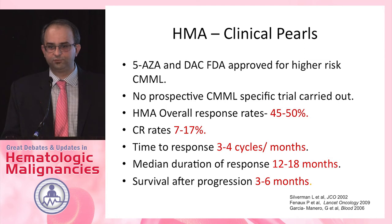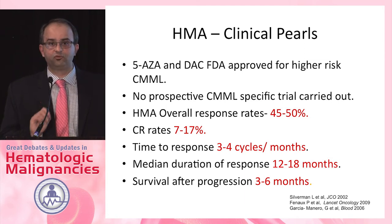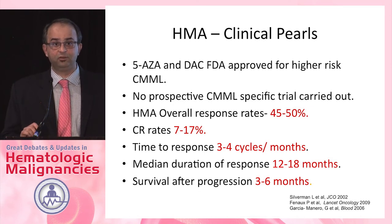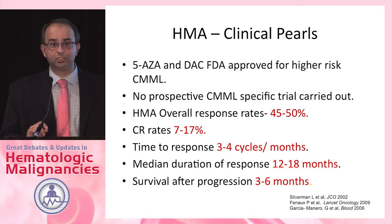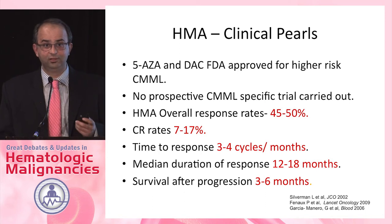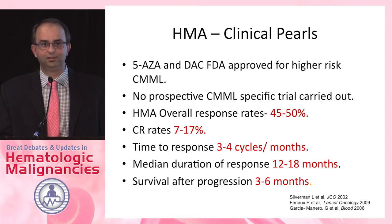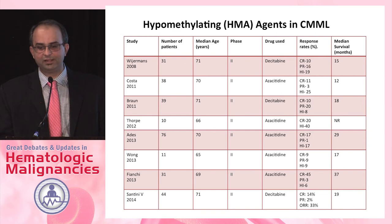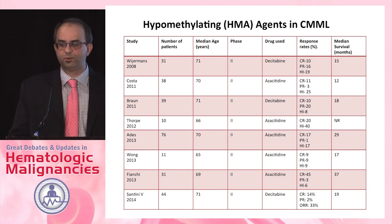There is no prospective trial that has assessed hypomethylating agents specifically in CMML. Azacitidine got approved for treatment of CMML based on only 11 patients on the AZA-001 trial and 7 patients on the French trial — quite shocking how lacking the data was before FDA and EMA approval. The overall response rate is a disappointing 45 to 50%, with true CR rates less than 20%. If patients do respond, responses last about 12 to 18 months, but progression and survival after that is dismal. Across most trials, CR rates are between 10 to 17%.